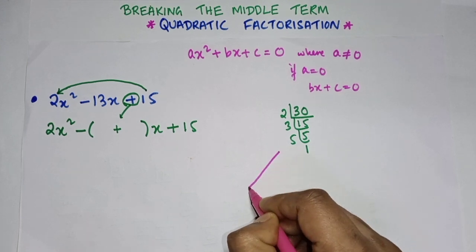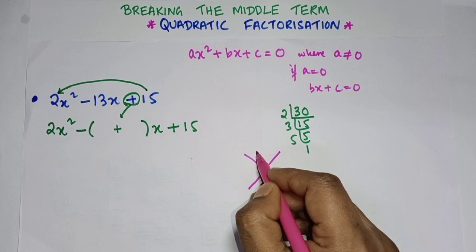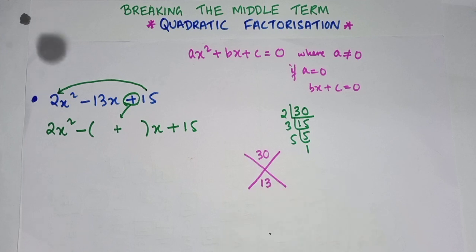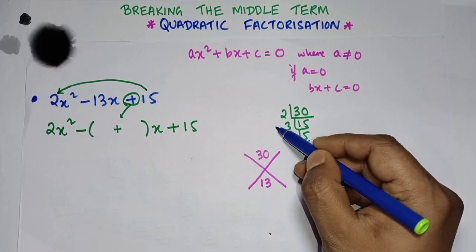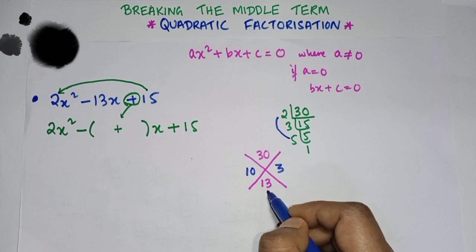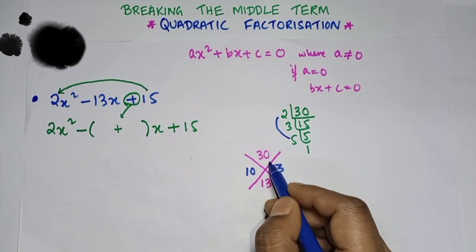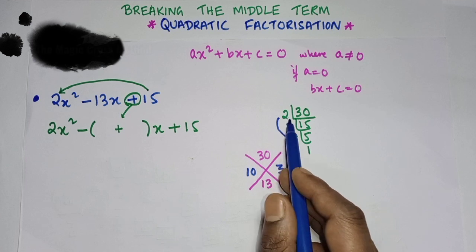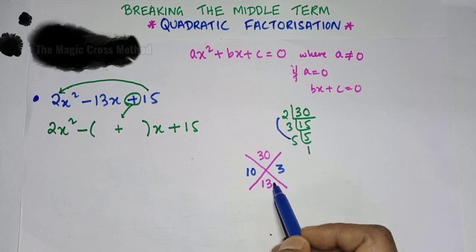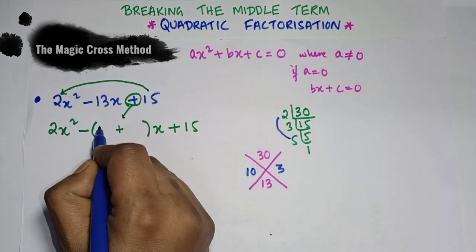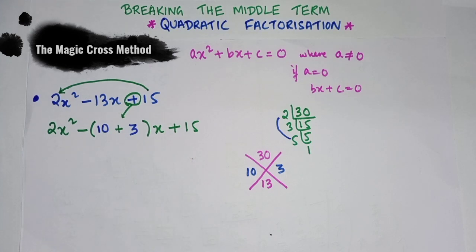This is why it is called the magic cross rule — we use a cross shape. After multiplying we should get 30, and after adding we should get 13. So we need two numbers: 10 and 3, because 10 × 3 = 30 and 10 + 3 = 13. Since the sign is plus, we use addition. So we write 10 and 3.